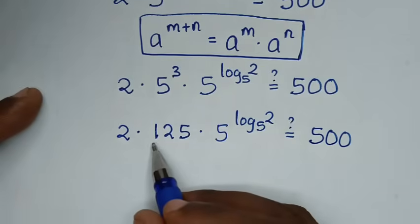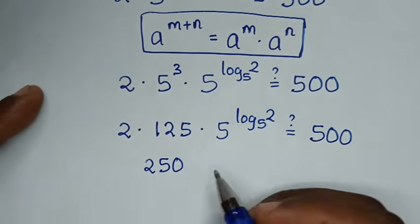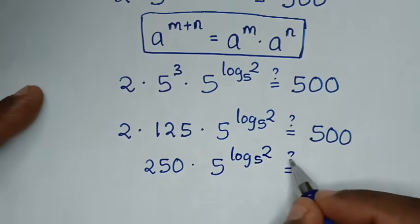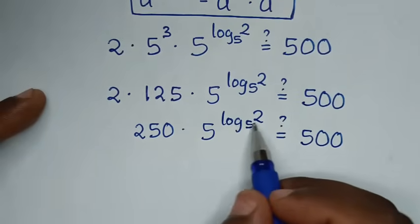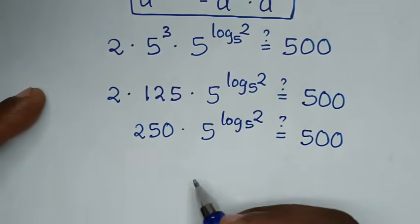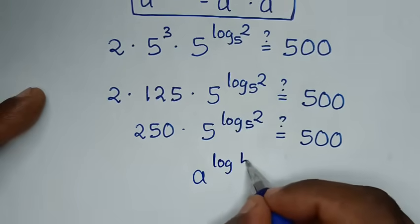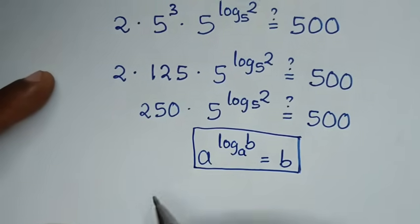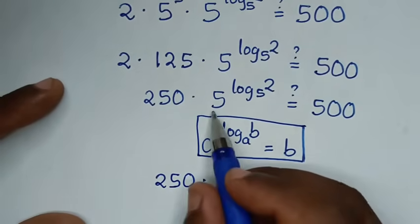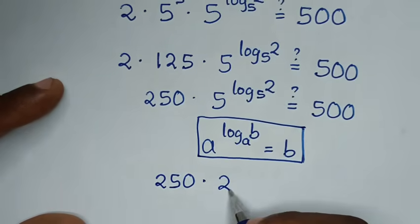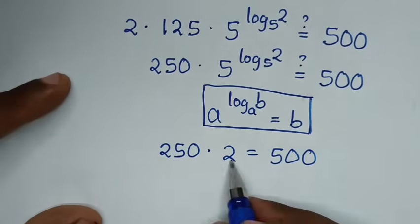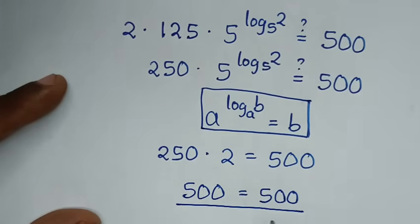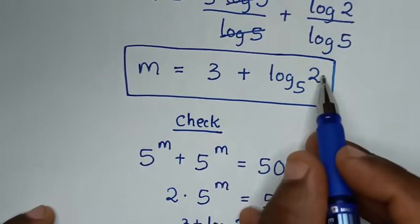From here, 5 power of log base 5 of 2 is in the form a^(log_a(b)) which equals b. So 5 power of log base 5 of 2 equals 2. Then it becomes 250 times 2, which equals 500. The left side equals the right side, confirming that the value of m is 3 plus log base 5 of 2.